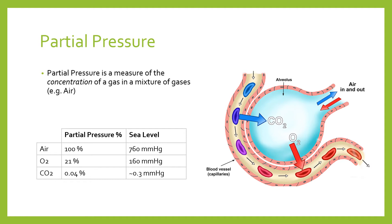Partial pressures are directly related to the proportion of those gases in the overall mixture. In the air, oxygen makes up 21% of the overall gas, therefore it makes up 21% of the overall pressure. Carbon dioxide makes up approximately 0.04% of the overall number of molecules of the air, so it is only 0.04% of the overall pressure at sea level — approximately 0.3 millimetres of mercury. Millimetres of mercury being a measure of pressure, of course.